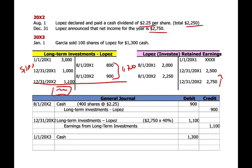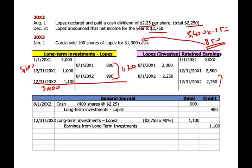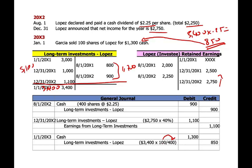Now Garcia sold 100 shares. The new investment balance is $3,000 plus $1,000 plus $1,100 minus $800 minus $900 equals $3,400. We sold 100 out of 400 shares, which is one-fourth or 25% of the investment. So we sold 25% of $3,400, which is $850 of our investment, for $1,300 in proceeds. Therefore we have a gain. We debit cash $1,300, credit long-term investments in Lopez $850 (25% of $3,400), and the difference is a gain of $450 on the income statement.